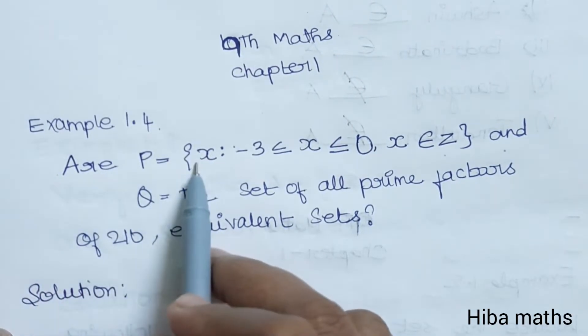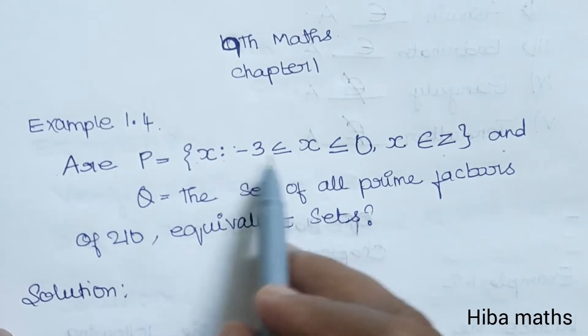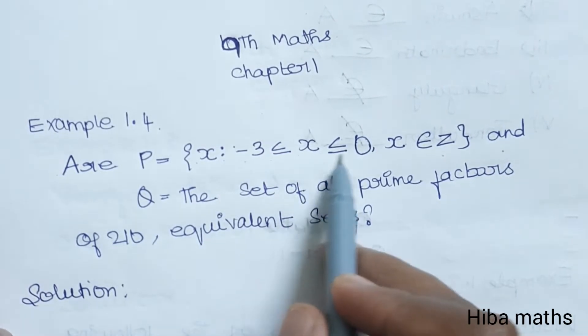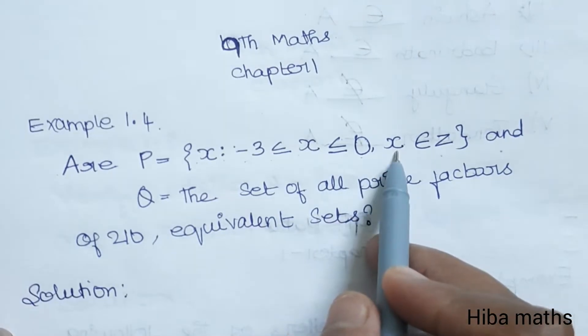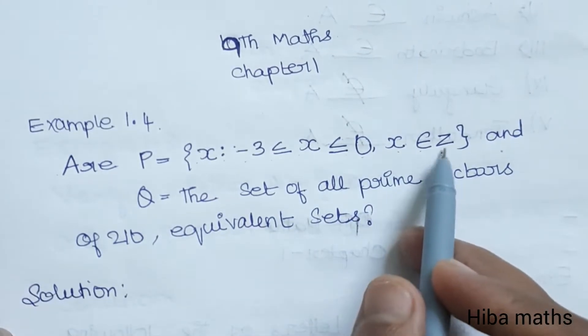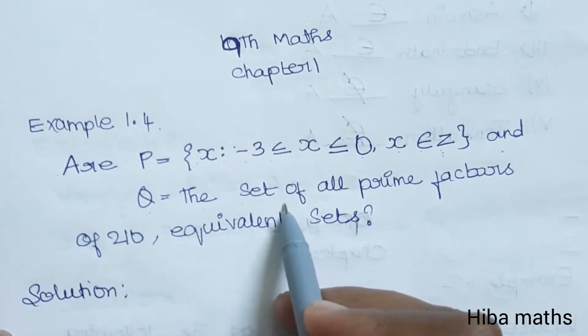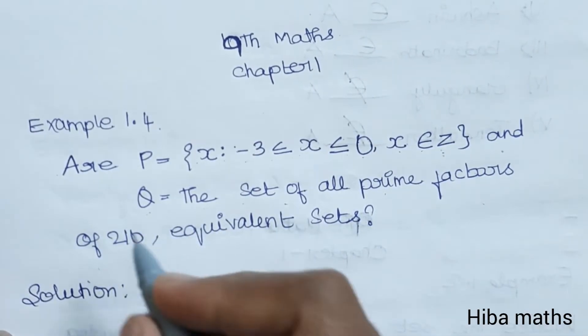P is equal to {x: -3 ≤ x ≤ 0, x ∈ Z}, where Z means integers, and Q is equal to the set of all prime factors of 210.